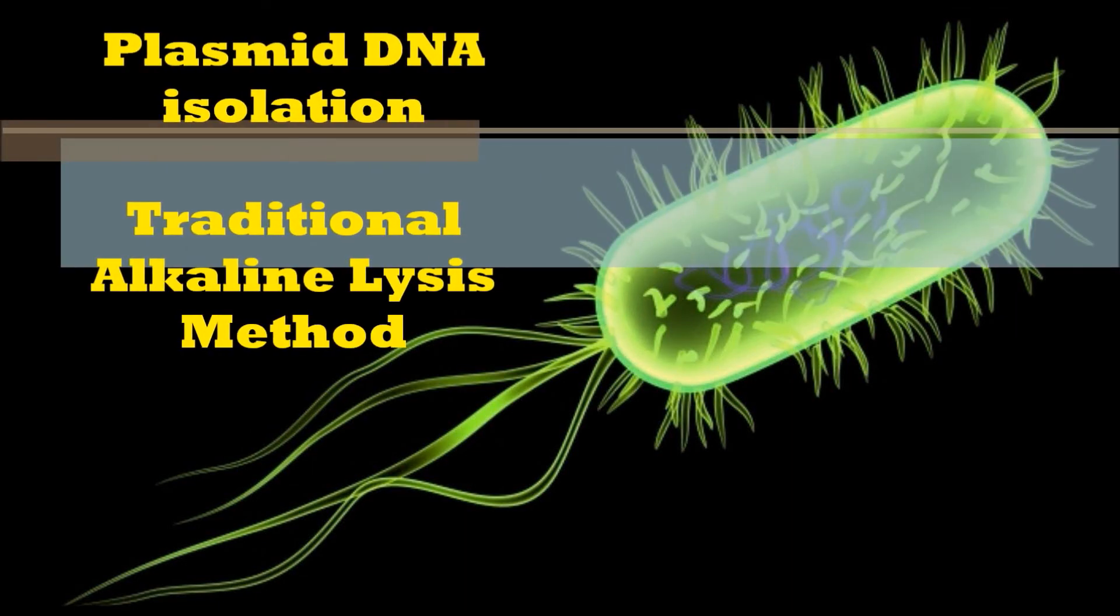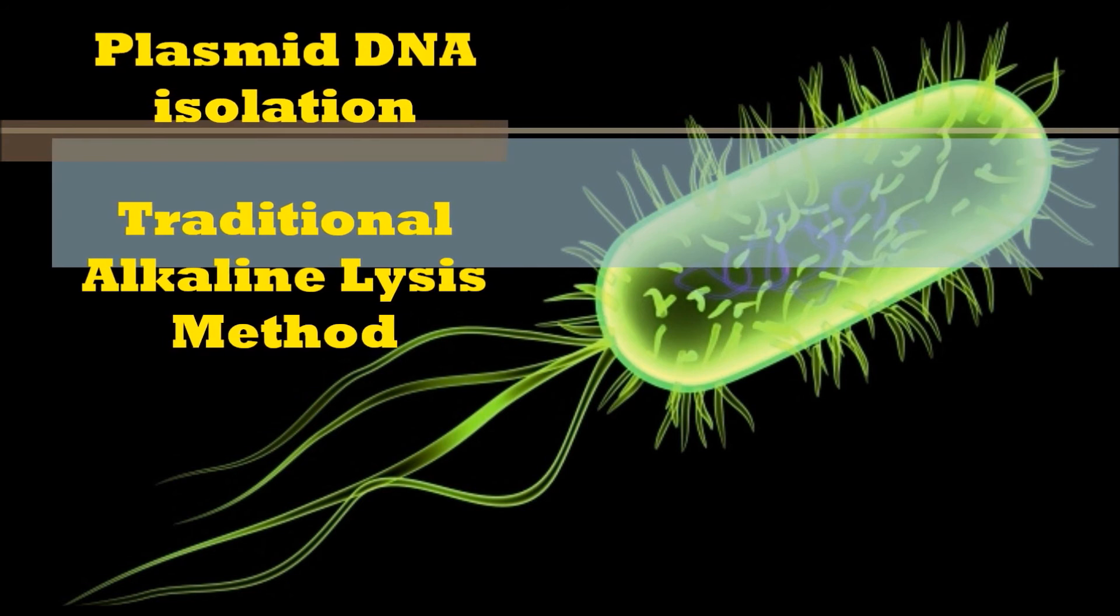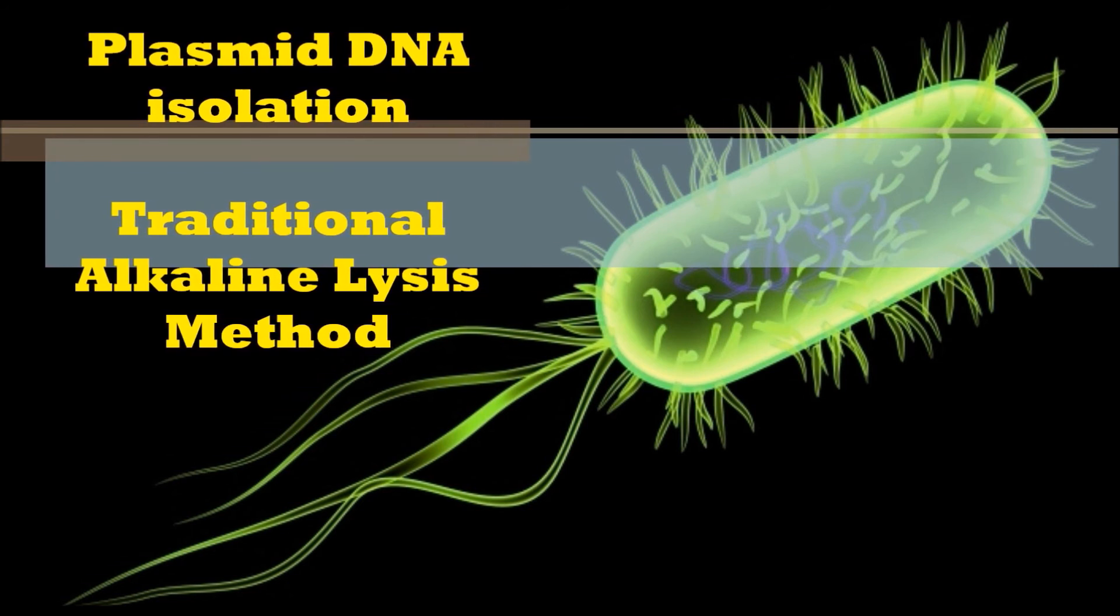Plasmid Isolation by Alkaline Lysis Method. Alkaline lysis method of plasmid isolation was originally developed by Brimbaum and Dolly in 1979.